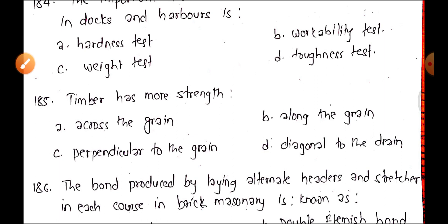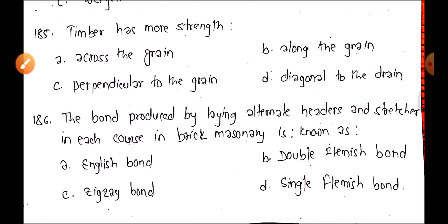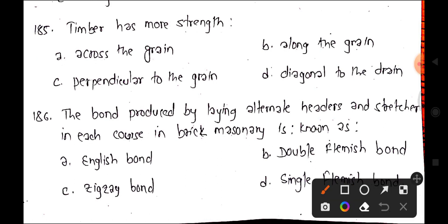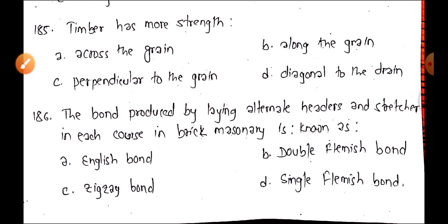Question 186: The bond produced by laying alternate headers and stretchers in each course in brick masonry is known as — A: English bond, B: double Flemish bond, C: zig-zag bond, or D: single Flemish bond. The answer is English bond, option A.